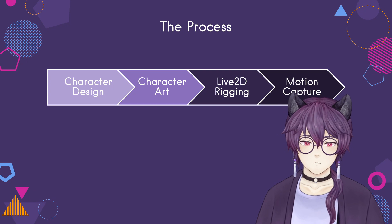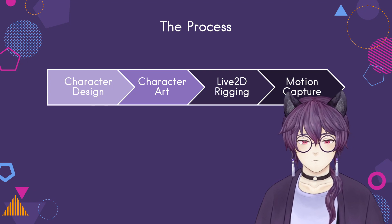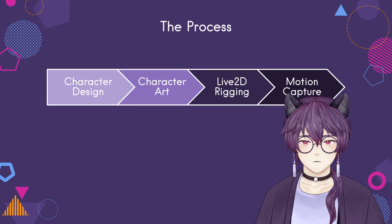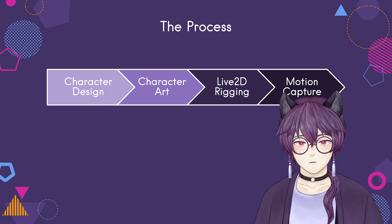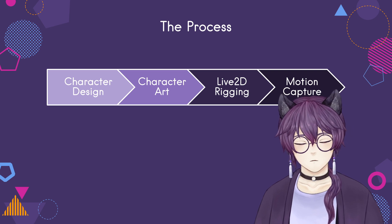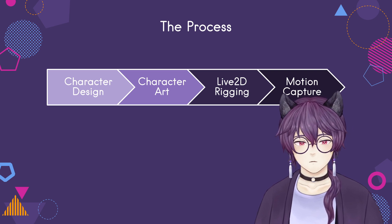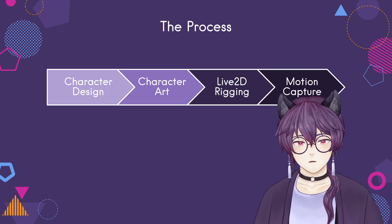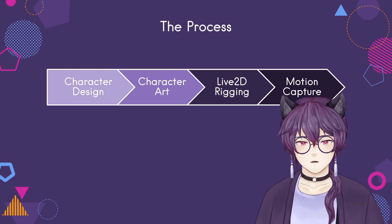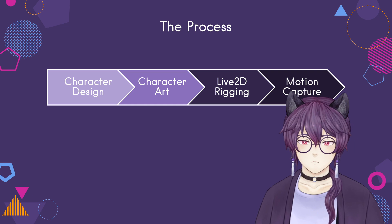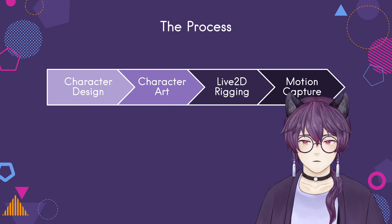Alright, so here's a basic flowchart of the process. You start with character design, then you or an artist that you commissioned does the character art. Then that art gets rigged in Live2D by someone that you commissioned, or if you had the patience, you could actually learn Live2D and do it yourself. Then the model from Live2D gets its movements controlled through motion capture technology. So let's take a closer look at character design.